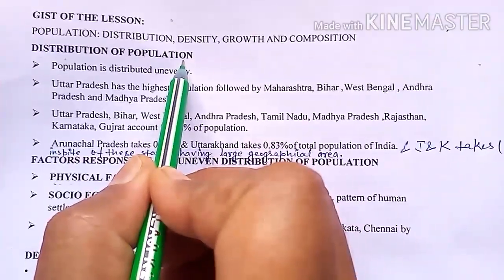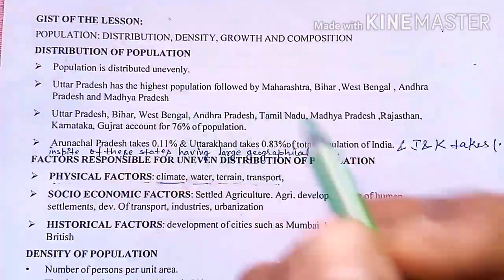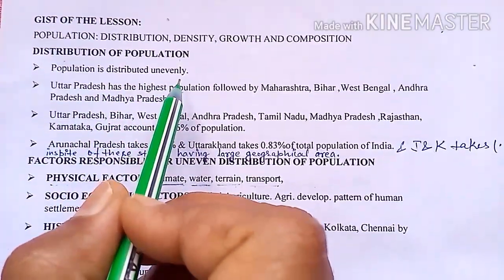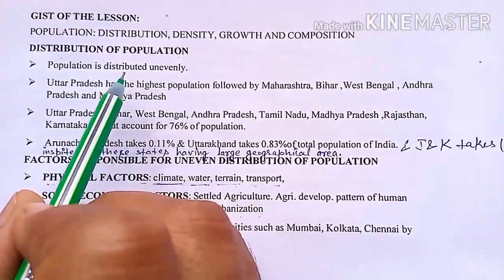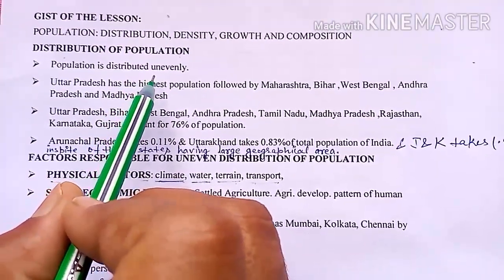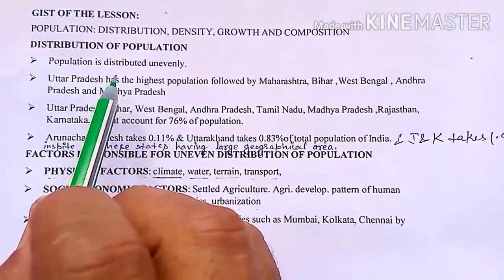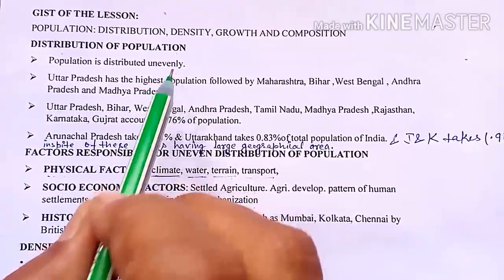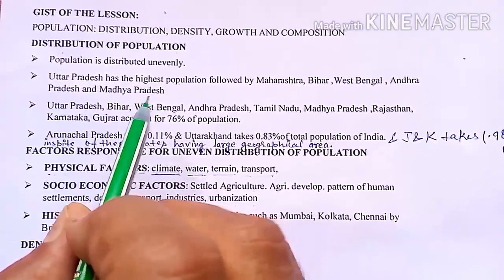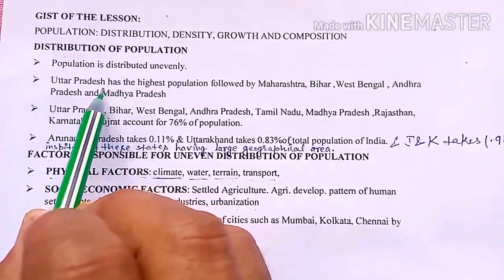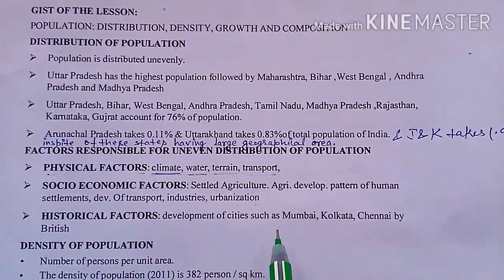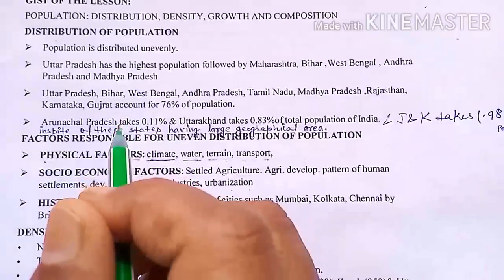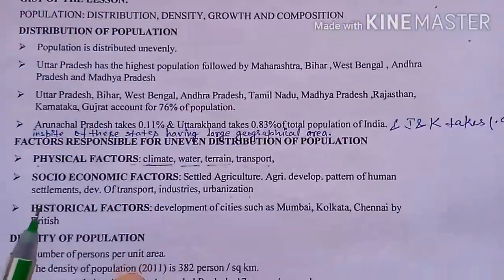In the second chapter of the first book, we talked about the uneven distribution of the population. The same condition exists in India — in India, the population is not equally distributed on the land area. So in India also, population is distributed unevenly, and there are many factors we will discuss further.